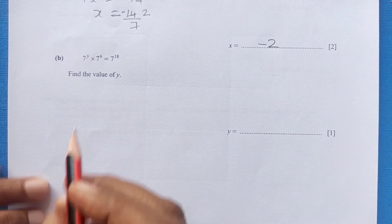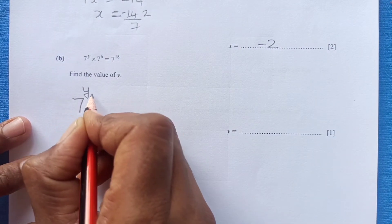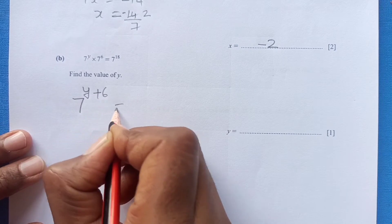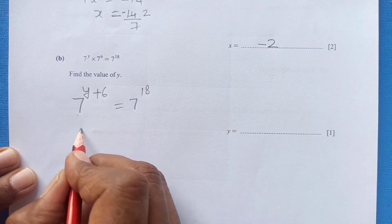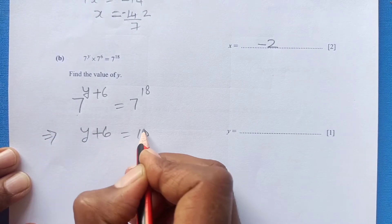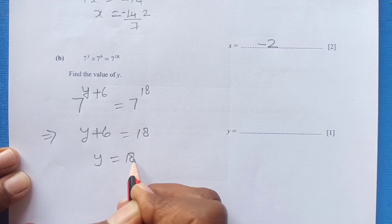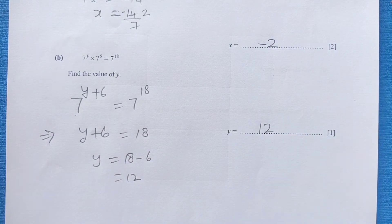Now part B find the value of y. So we have 7 power y plus 6 equals to 7 power 18. Now equate the powers because base is same. So by equating the powers y plus 6 equals to 18. So y will be 18 minus 6 which is 12.